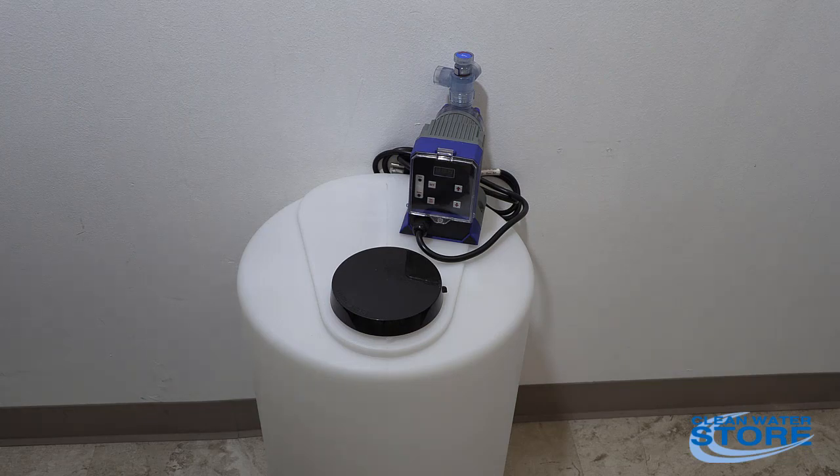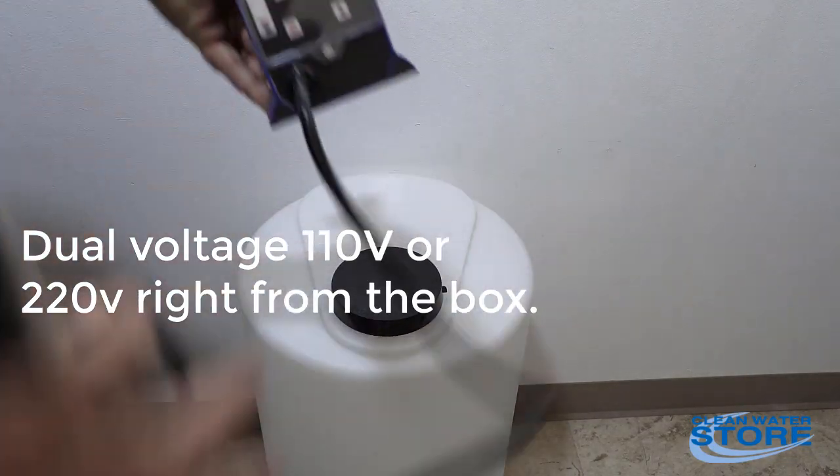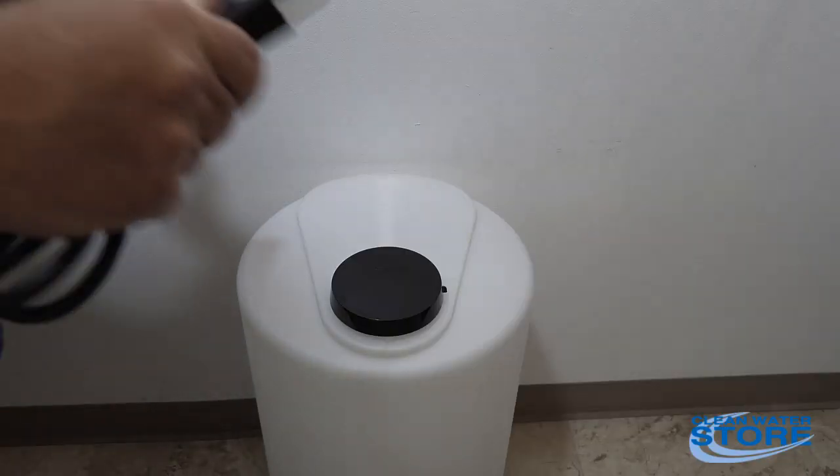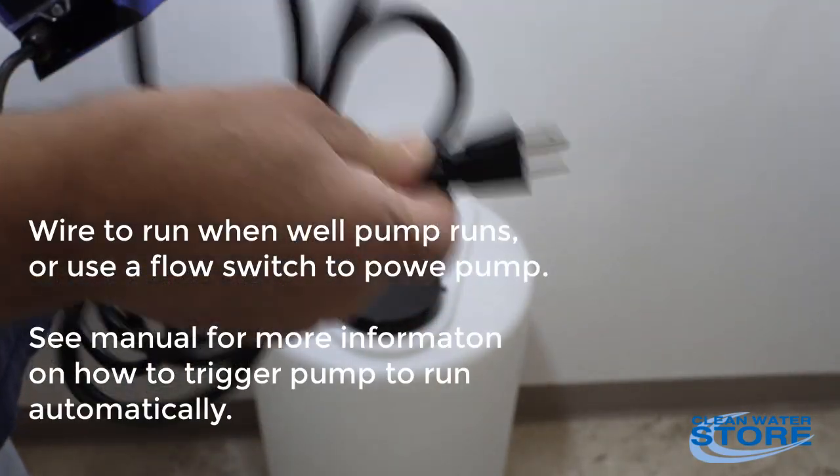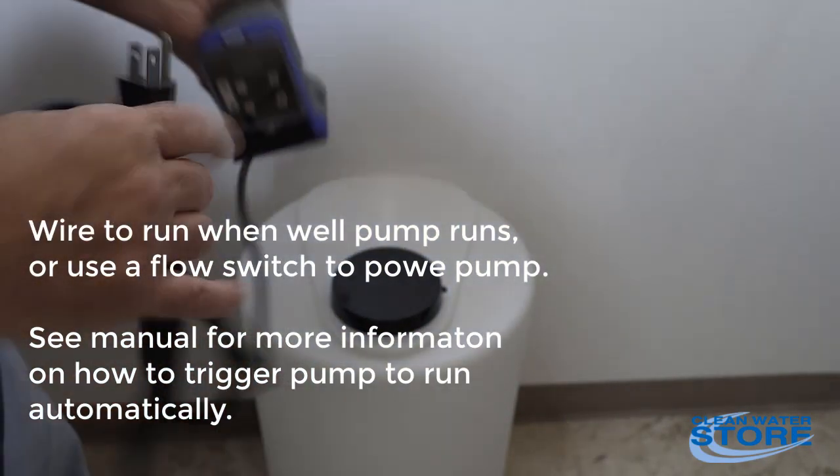The system we're setting up today—these pumps will work off of 110 or 220 volts. They come with a 110 plug. If you're going to go 220, we recommend cutting the plug off, either putting a 220 plug in or wiring it up directly hardwired into your well pump.